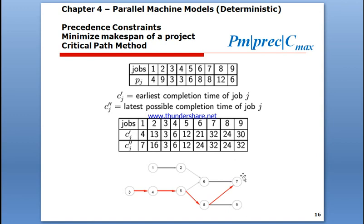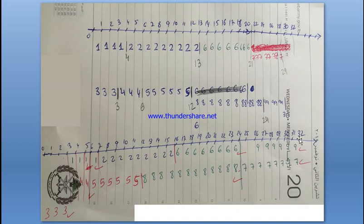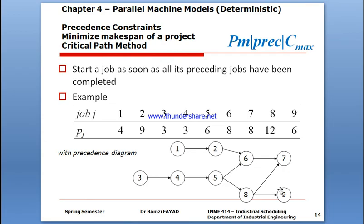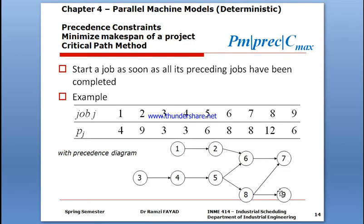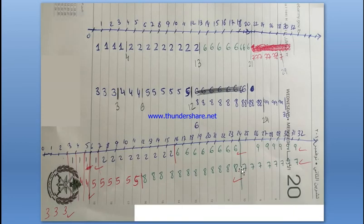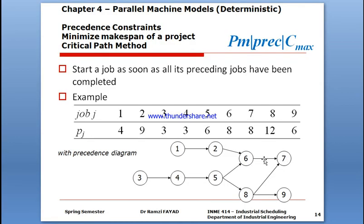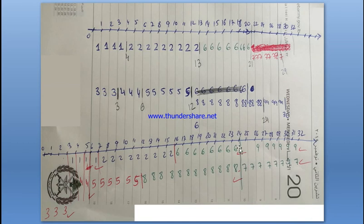Now we start the backward pass. Both final jobs finish at thirty-two, so we work backward from thirty-two. We have two tracks, so we consider two machines, both finishing at thirty-two. Job nine requires job six, and job seven requires job eight. Working backwards, job eight cannot start until jobs seven and nine are accounted for. Job eight and job six must be completed before job seven can start.